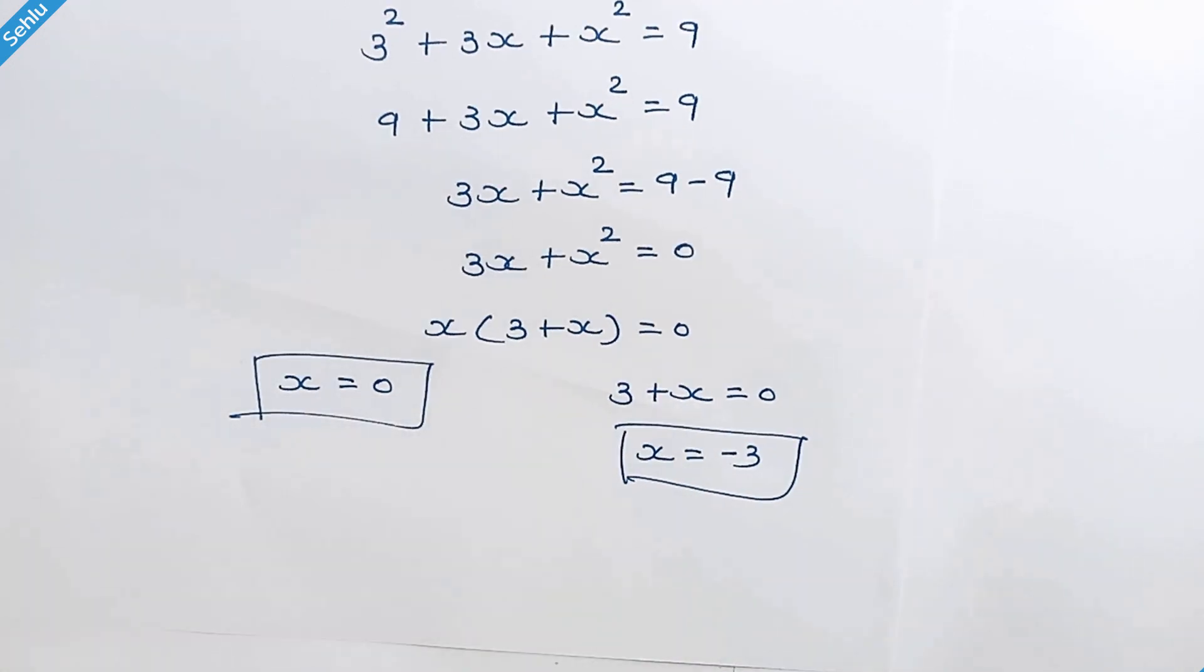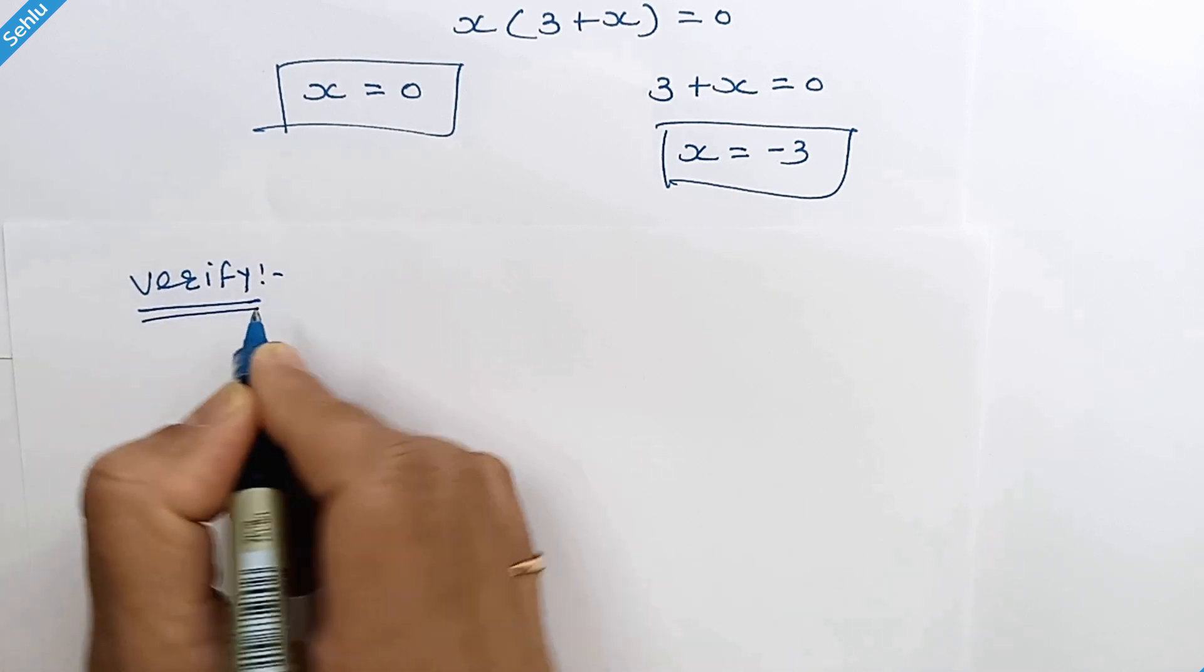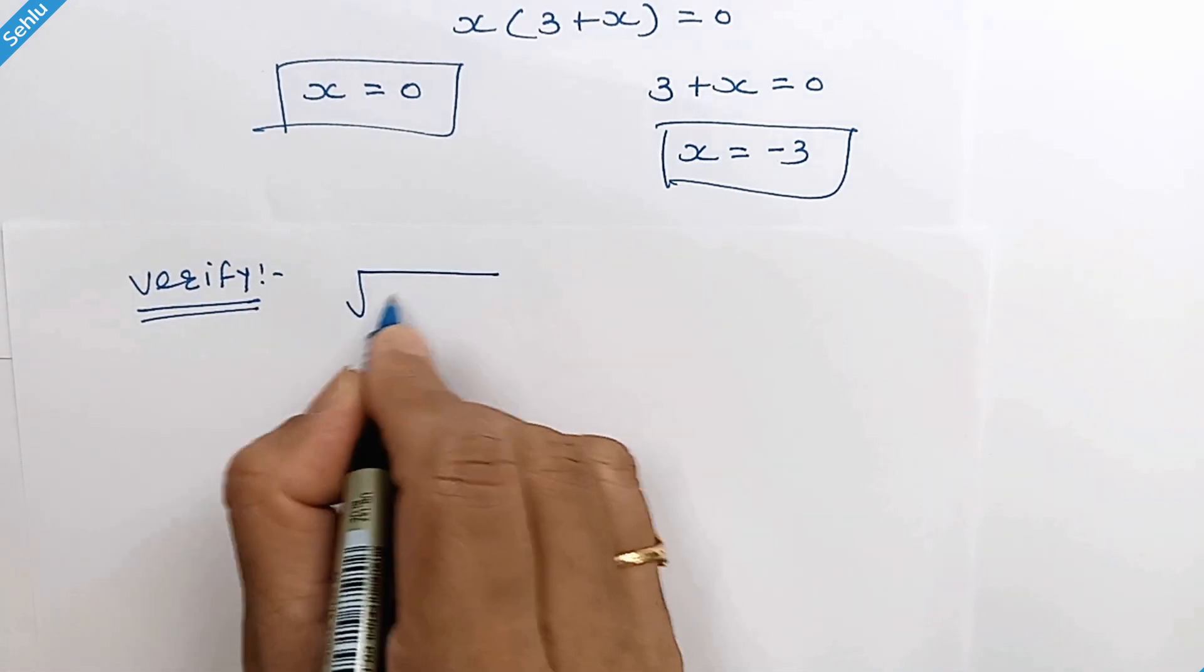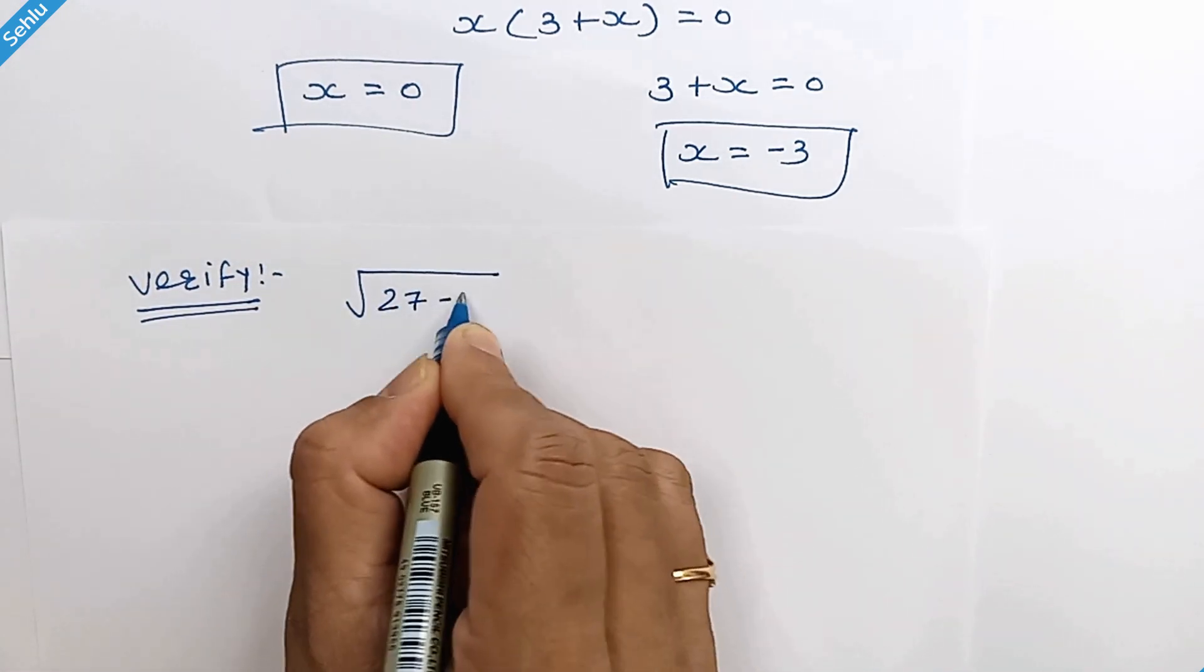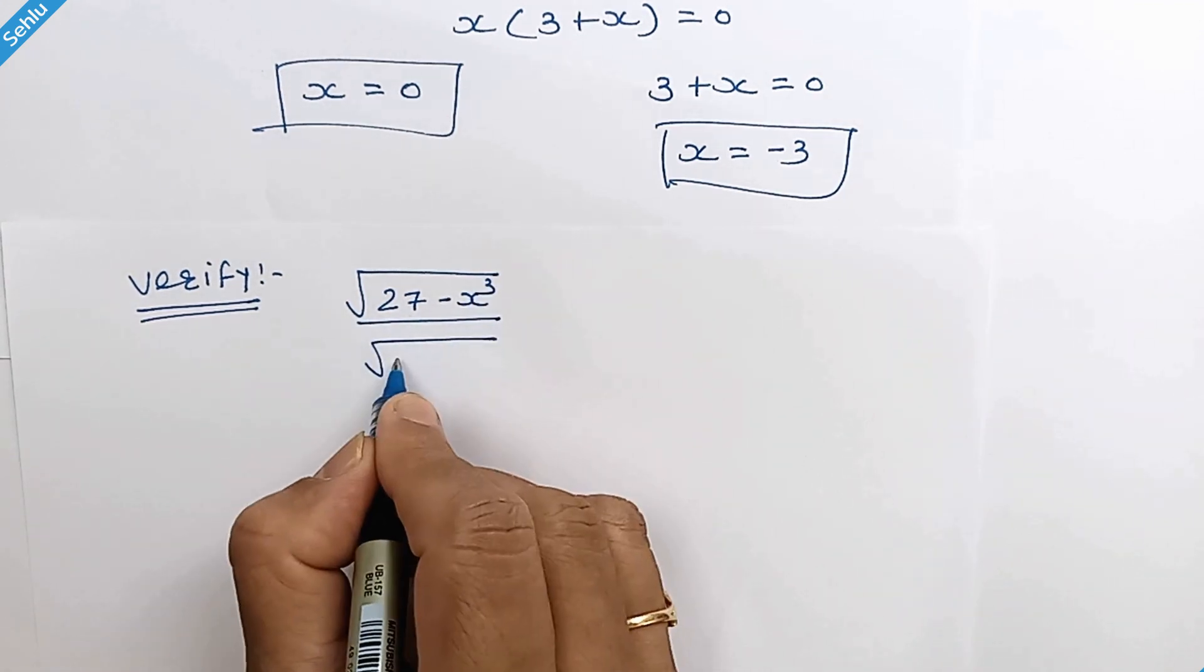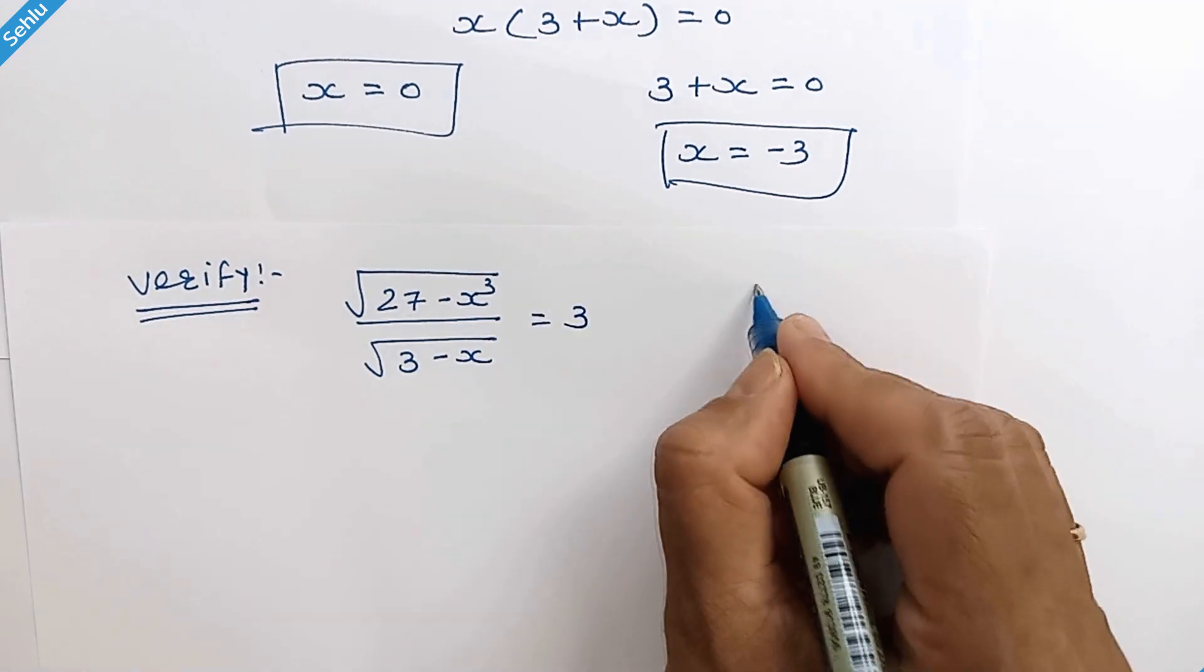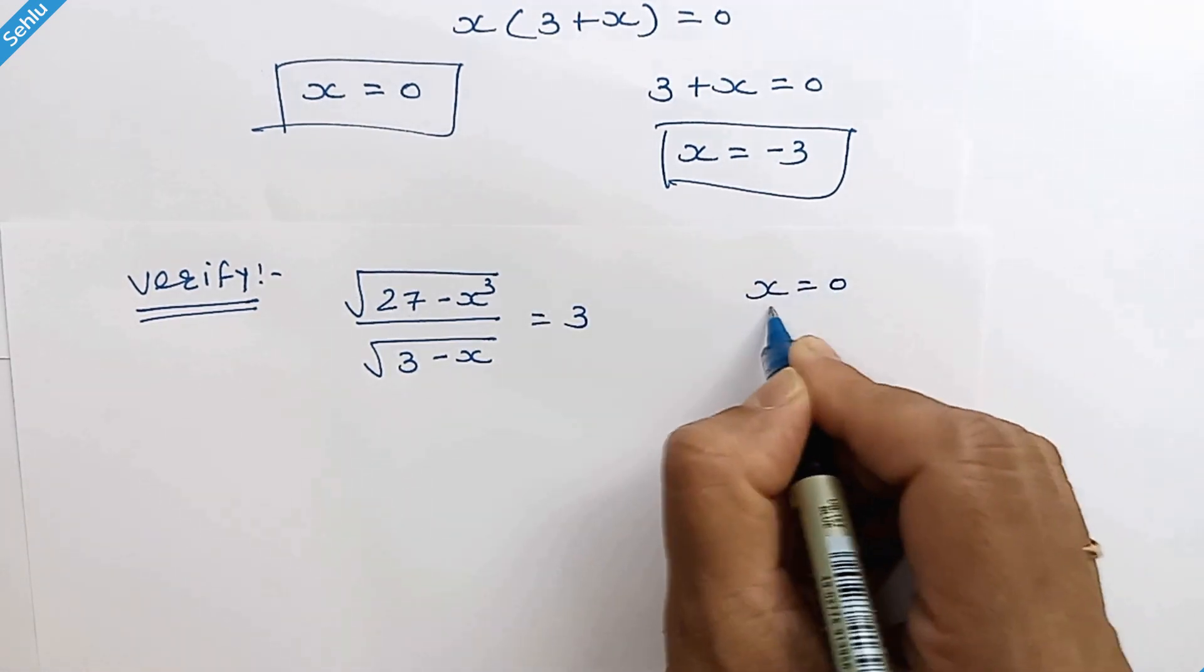Now let's verify these values. The question is: square root of 27 minus x cube over square root of 3 minus x equals 3. First we will take x equals 0.